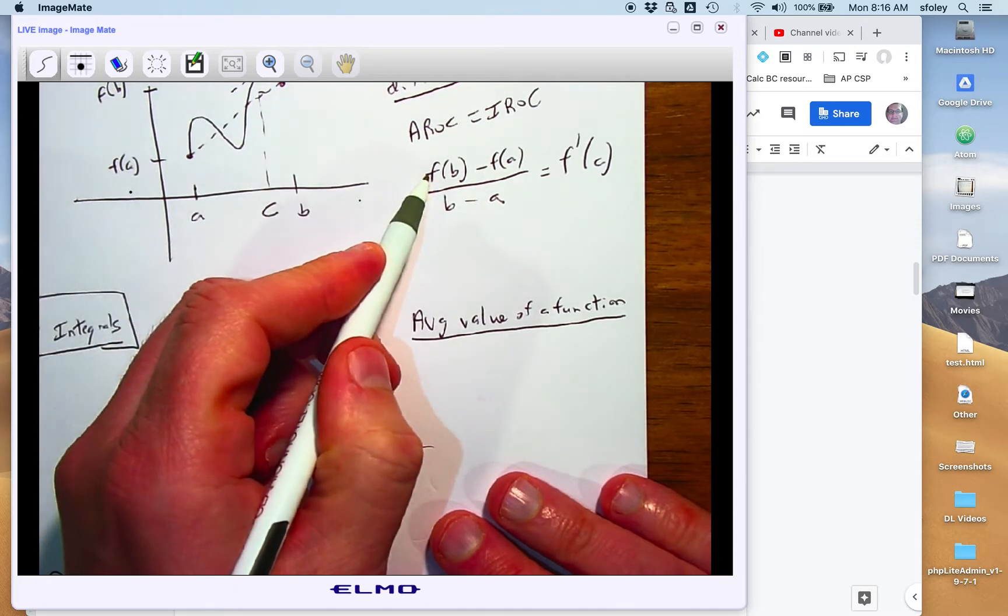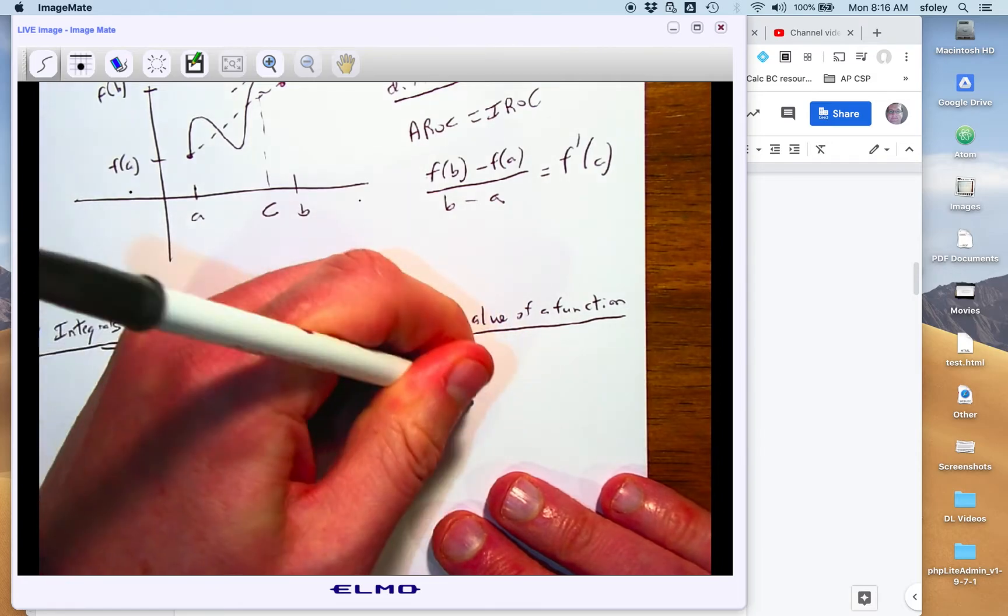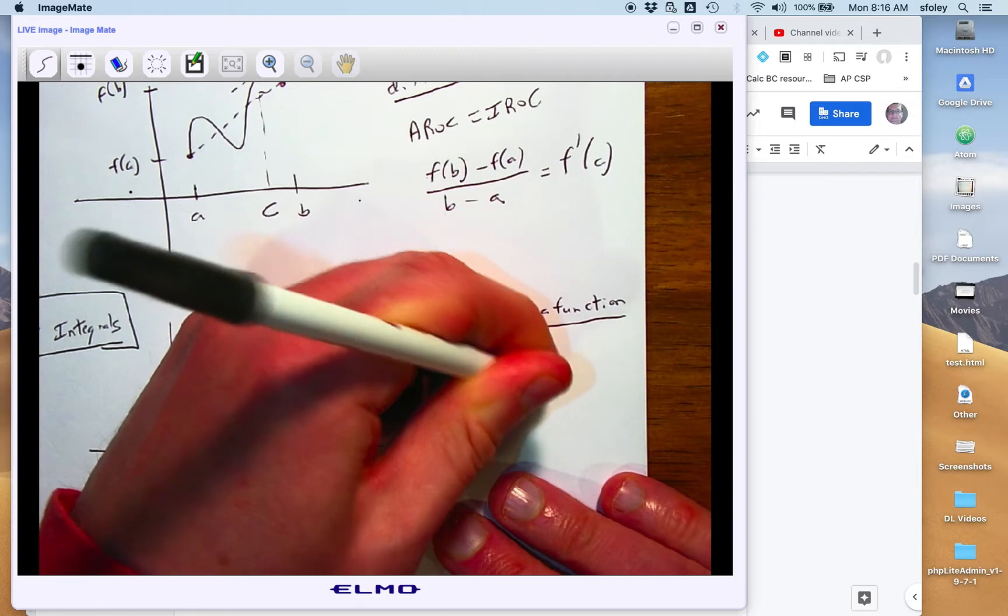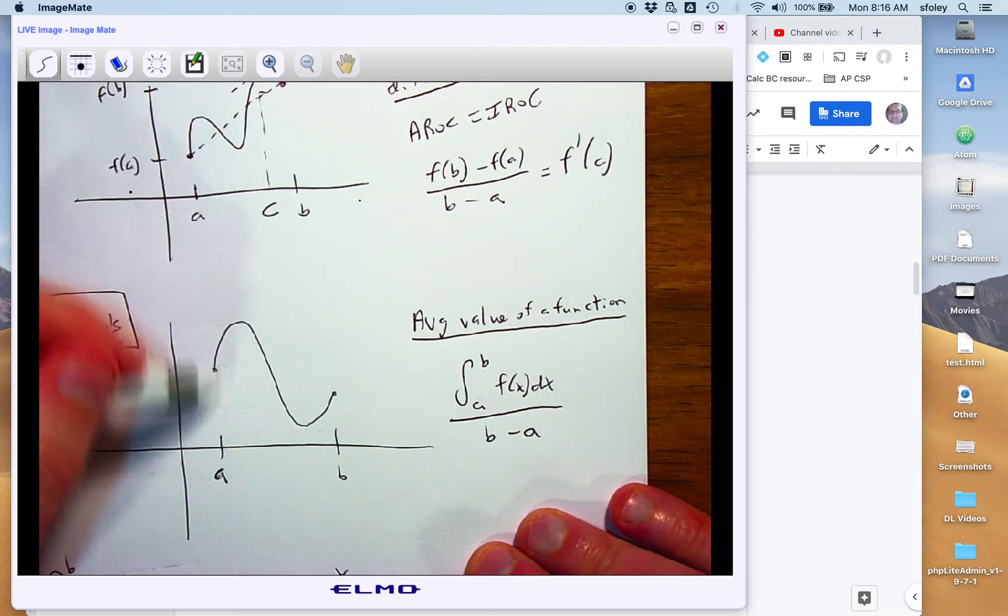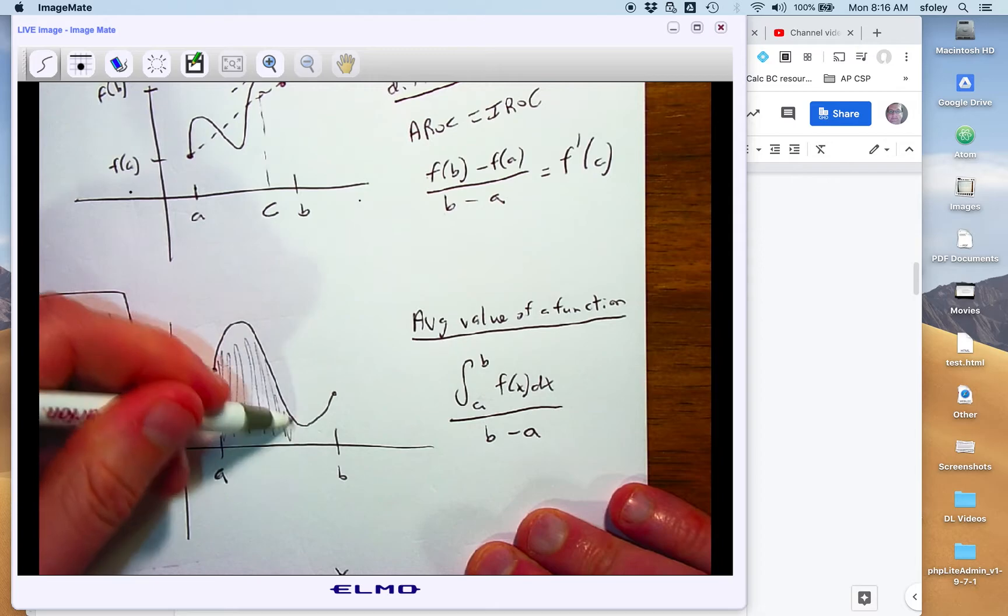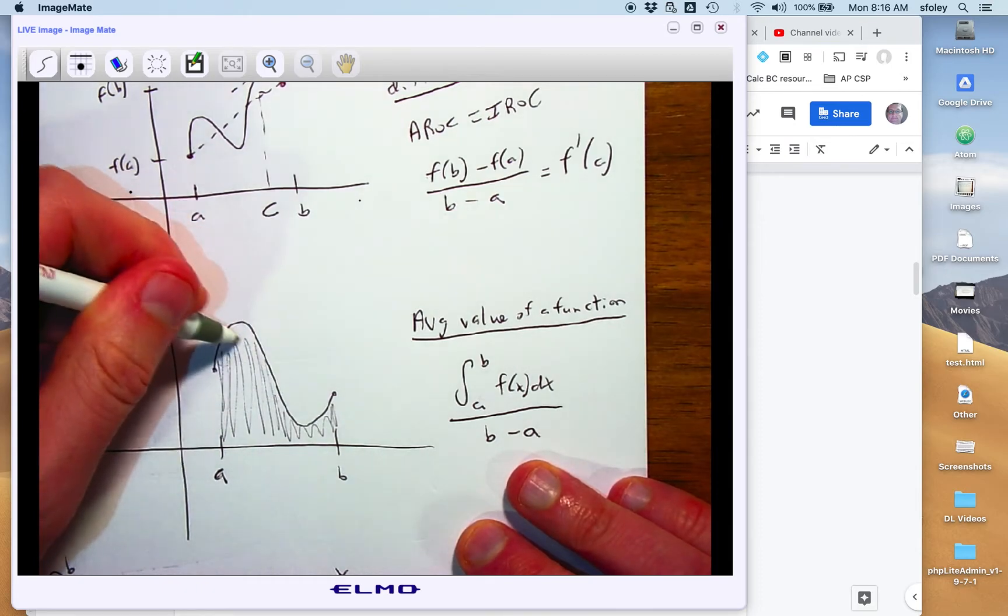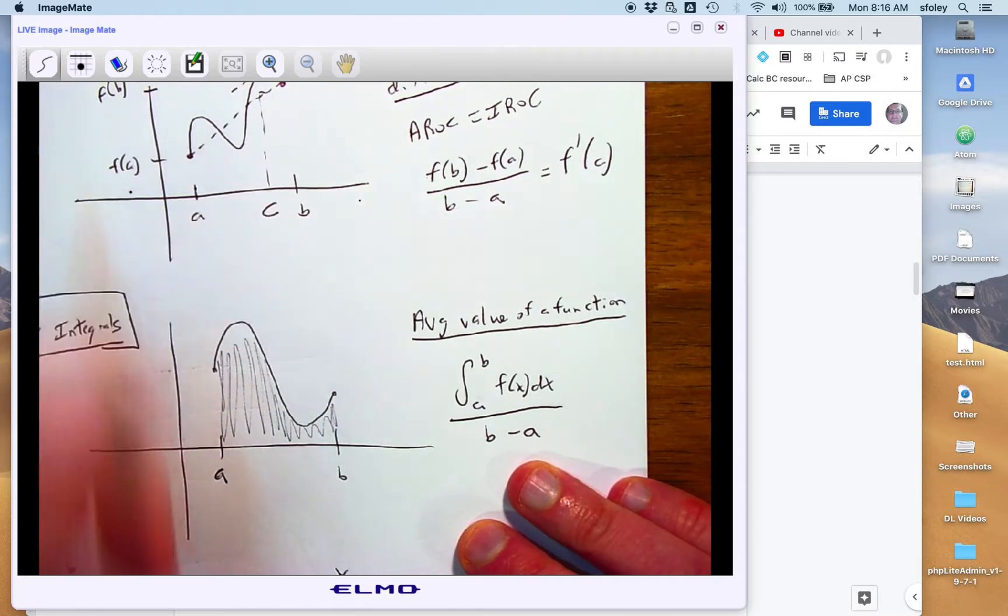So AROC is change in y over change in x. The average value of a function is the integral divided by the length of the interval. And so we find the area under the curve. That's what the integral does. And then if we divide by the length of the interval, it's essentially finding the average height of the curve. And so we need the same area above this line that I'm about to draw as I have below.